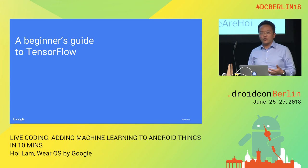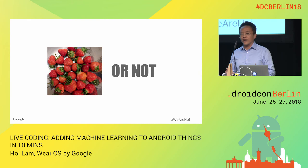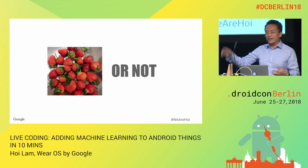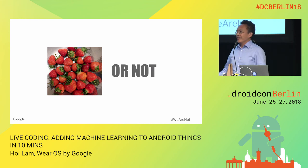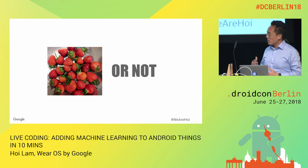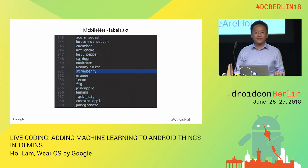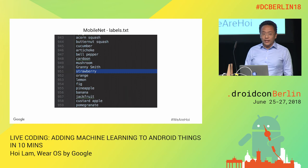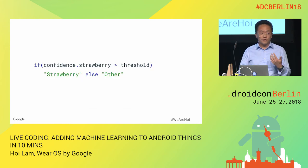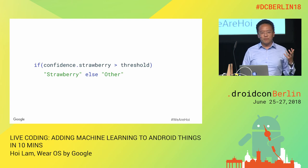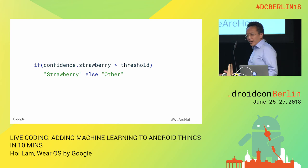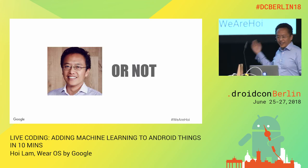I was inspired at the Android Maker event in Paris, where a presenter said — referencing an American comedy show — 'They have hot dog or not, why don't we do strawberry or not? We're European after all, and strawberry is healthier.' But then I realized there's a pre-trained model called MobileNet, and strawberry is already one of the categories it recognizes — category 951. So I decided to do something MobileNet doesn't have: a 'hoi or not' classifier — hence the hashtag 'we are hoi' for this talk.